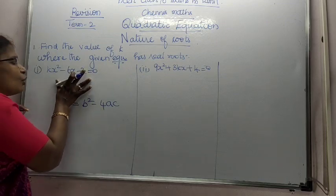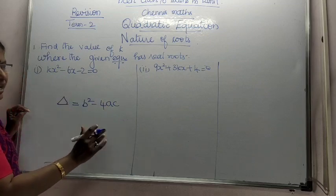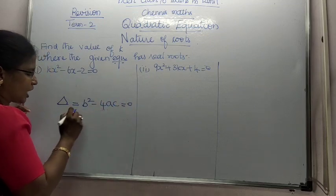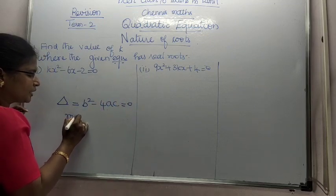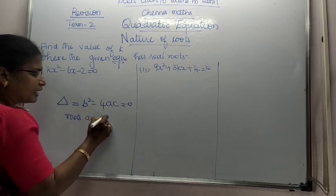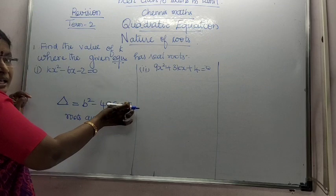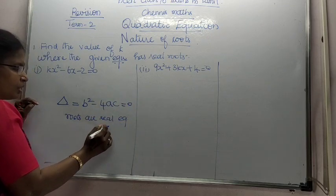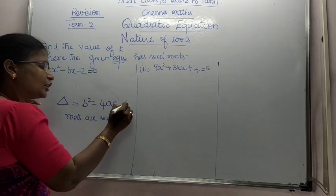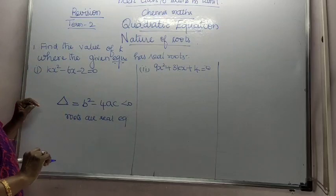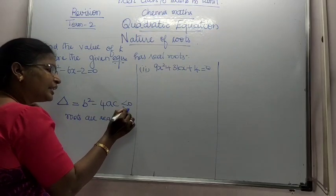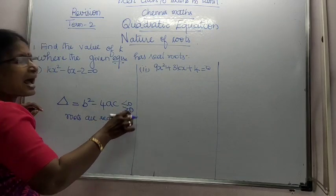If b squared minus 4ac gives an answer of 0, the roots are real and equal. If it is less than 0, it is imaginary roots. If it is greater than 0, the roots are real and unequal.